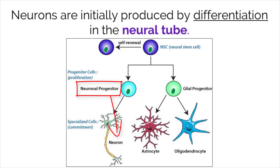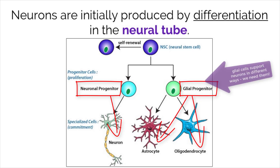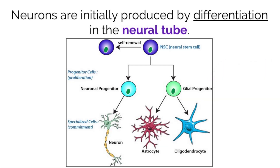If the stem cell, on the other hand, is programmed to become a glial progenitor, it will then generate different types of glial cells that support the nerve cells in carrying out their function. Both types of cells are essential for the proper workings of the nervous system.